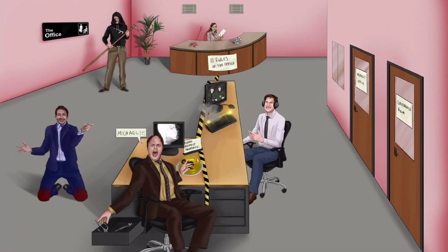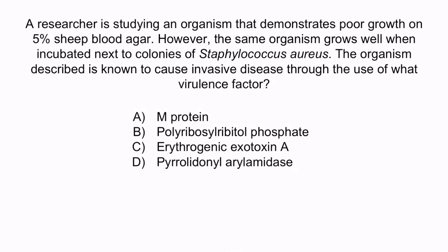Now let's review with a question. Our researcher is studying an organism that demonstrates poor growth on 5% sheep blood agar. However, the same organism grows well when incubated next to colonies of Staphylococcus aureus. The organism described is known to cause invasive disease through the use of what virulence factor? A, M-protein; B, polyribosylribotyl phosphate; C, erythrogenic exotoxin A; or D, pyrrolodonyl arlamidase. From the question stem, the organism being described is Haemophilus influenzae — it demonstrates poor growth on 5% sheep blood agar but grows well next to Staphylococcus aureus because Staph aureus is beta-hemolytic, lysing red blood cells and providing nearby H. flu colonies with NAD (factor V) and hematin (factor X).